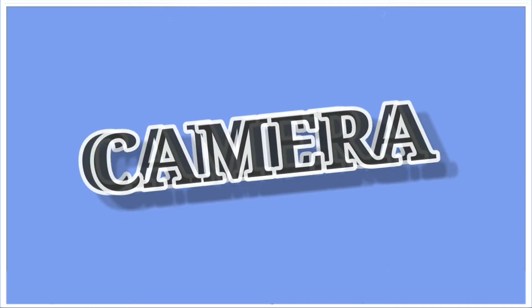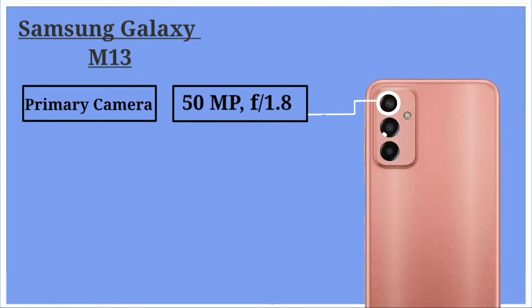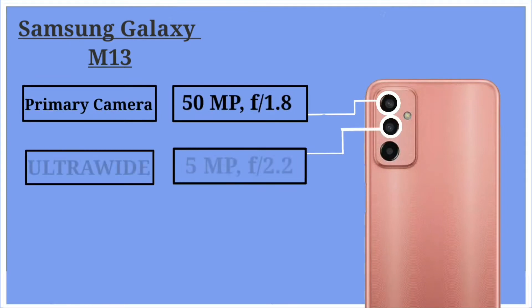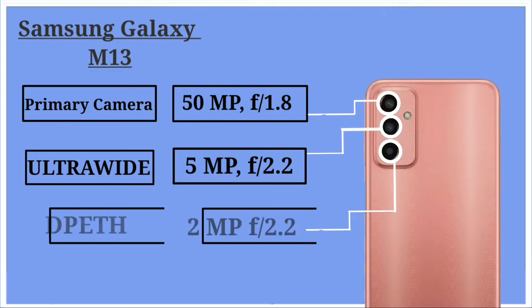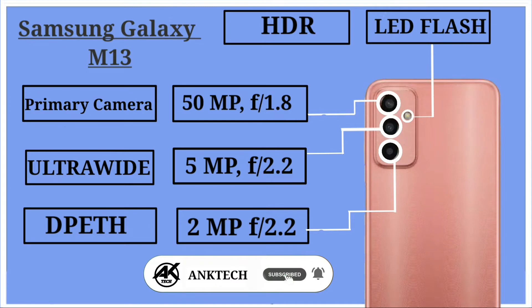Let's talk about the camera. Starting with the Samsung Galaxy M13 — it has a triple camera setup. The primary camera is 50 megapixels with f/1.8 aperture, an ultra-wide of 5 megapixels with f/2.2, and a depth camera of 2 megapixels with f/2.2. It also has HDR and LED flash.